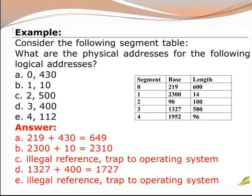This is a numerical question related to segmentation in which some logical addresses are given and we have to compute the physical address. Question 1: logical address is (0, 430). Segment 0 has base address 219 and length 600. First, compare the offset to the length: 430 is less than 600, so it is a valid offset. To compute the physical address, add the offset to the base address: 290 plus 430 gives the physical address.